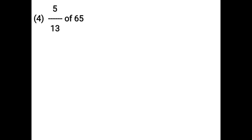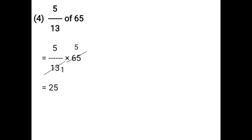5 upon 13 of 65. That is equal to 5 upon 13 into 65. Using the cancellation method: 13 ones are 13, 13 fives are 65, that is equal to 5 fives, which is 25.